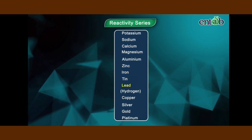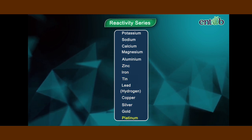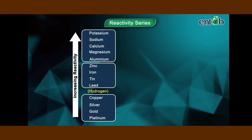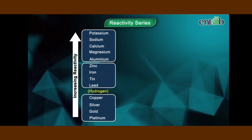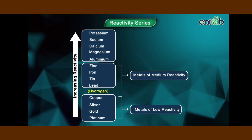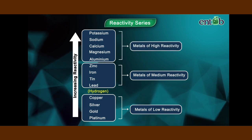On the basis of reactivities, we can group the metals into three different reactivity categories: metals of low reactivity, metals of medium reactivity, and metals of high reactivity.